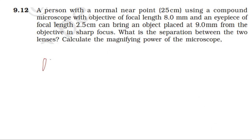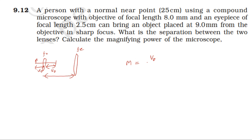The magnifying power formula for a compound microscope is: M = (v0 / u0) × (1 + D/fe), where v0 is the image distance for the objective lens, u0 is the object distance for the objective lens, D is the least distance of distinct vision (25 cm), and fe is the focal length of the eye lens.